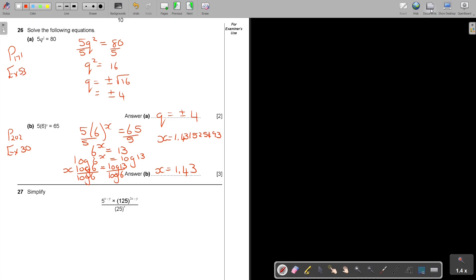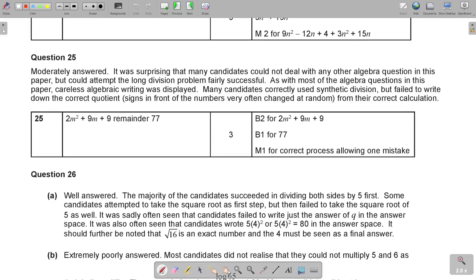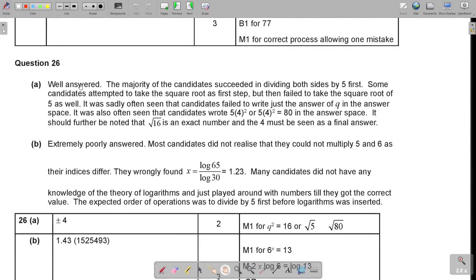Let's go and look at the answer for the report. So if I look here, this is question 26. The first one was well answered. The majority of candidates succeed in dividing both sides by 5 first. Some candidates attempt to take the square root as first step, but then fail to take the square root of 5 as well. It was sadly often seen that candidates fail to write just the answer of Q in the answer space. It should further be noted that √16 is an exact number and the 4 must be seen in the final answer. But remember the plus minus.